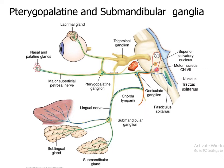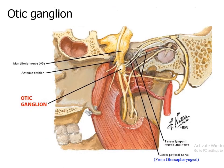The chorda tympani nerve, carrying pre-ganglionic parasympathetic fibers from the facial nerve, synapses with post-ganglionic parasympathetic fibers in the submandibular ganglion. These post-ganglionic parasympathetic fibers supply the submandibular gland, the sublingual salivary gland, and the salivary glands in the floor of the mouth.